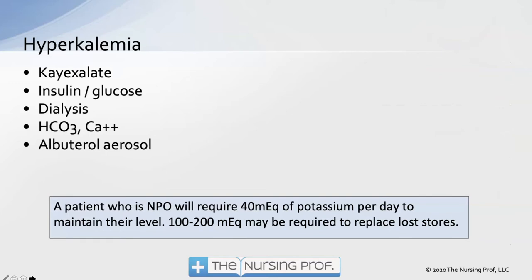To quickly lower potassium, give insulin and glucose — insulin pushes potassium back into muscle; glucose is given to prevent hypoglycemia. K-exalate binds potassium in the gut but takes time. Dialysis also takes time. For rapid action, insulin and glucose is preferred, then use dialysis or K-exalate for long-term management. Calcium gluconate and bicarbonate work similarly. Albuterol aerosols can decrease potassium but may cause cardiovascular effects like tachycardia.